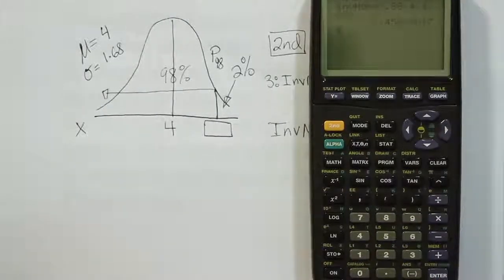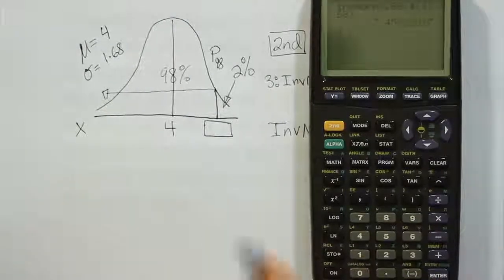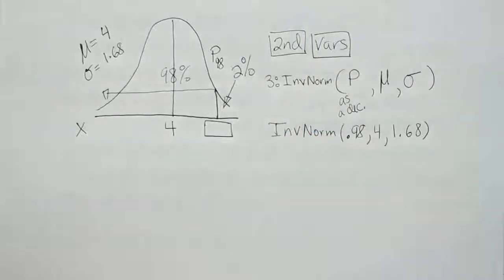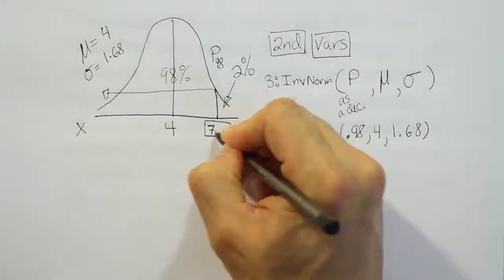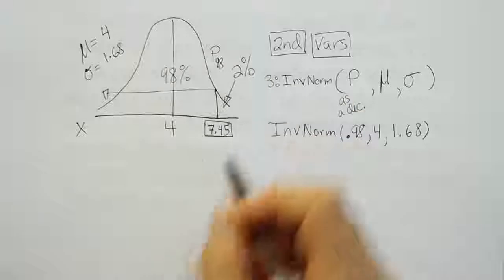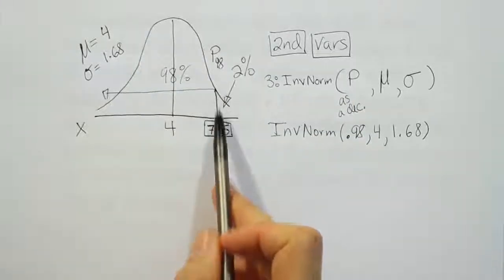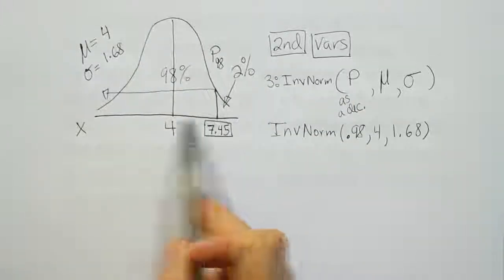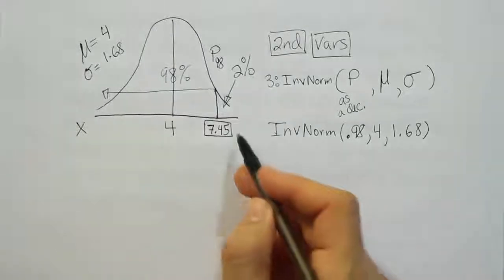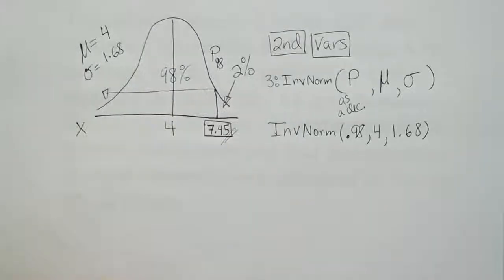It tells us the waist circumference that they lost was 7.45. So in other words, basically around 7.5 was the cutoff between the top 2% and the lower 98%. That's quite a reduction in waist circumference.